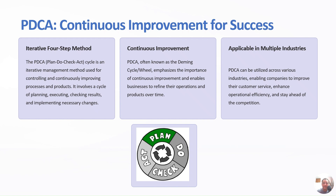In the Do step, you test the change by carrying out a small-scale study like a pilot run. In the Check step, you review the test, analyze the results, and identify what you have learned. In the Act step, you take action based on what you learned and implement it. If the change did not work, go through the cycle again with a different plan. If successful, incorporate what you learned into wider changes and use it to plan new improvements.